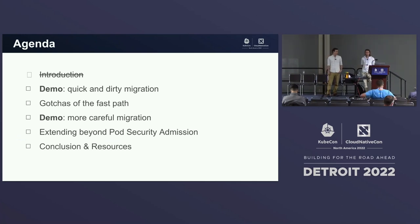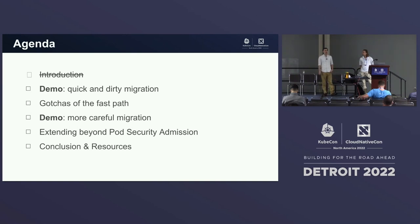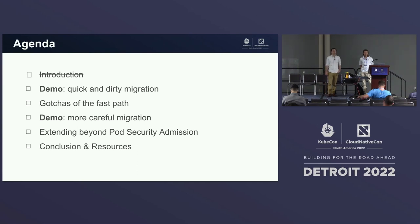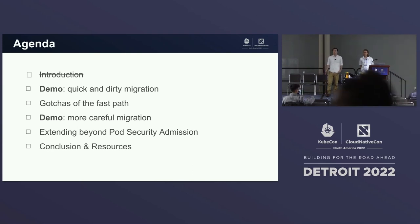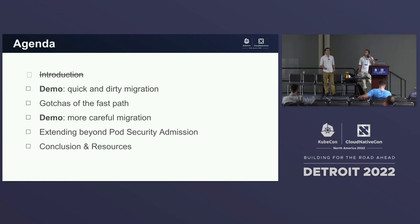For the talk agenda, in a moment I'll hand it over to Sam, who's going to give a demo of the fast path migration and what that might look like. Then we'll talk about some of the problems you can face doing the fast path. Then we'll see another demo of how you can do safer migration going a little slower and taking into account some of those problems.